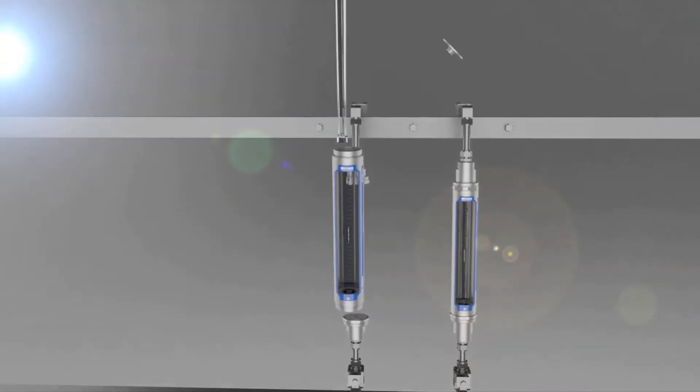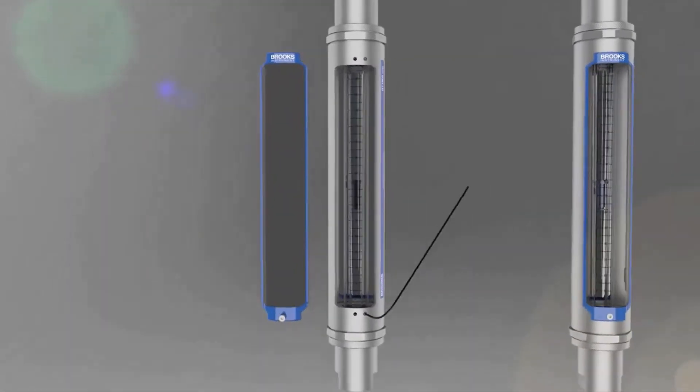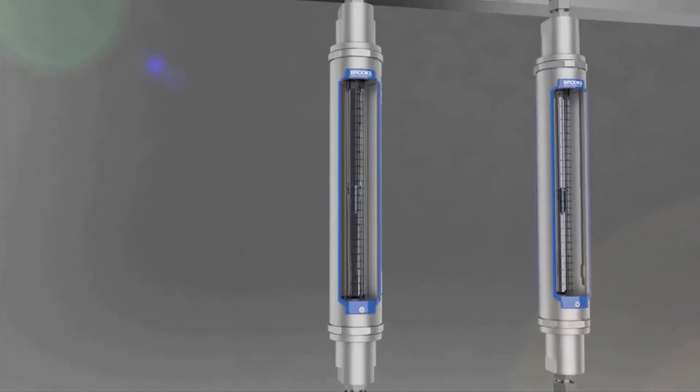In situ cleaning and replacing of the glass tube or float has never been easier. The new scale design allows for offset correction to compensate for process variation.